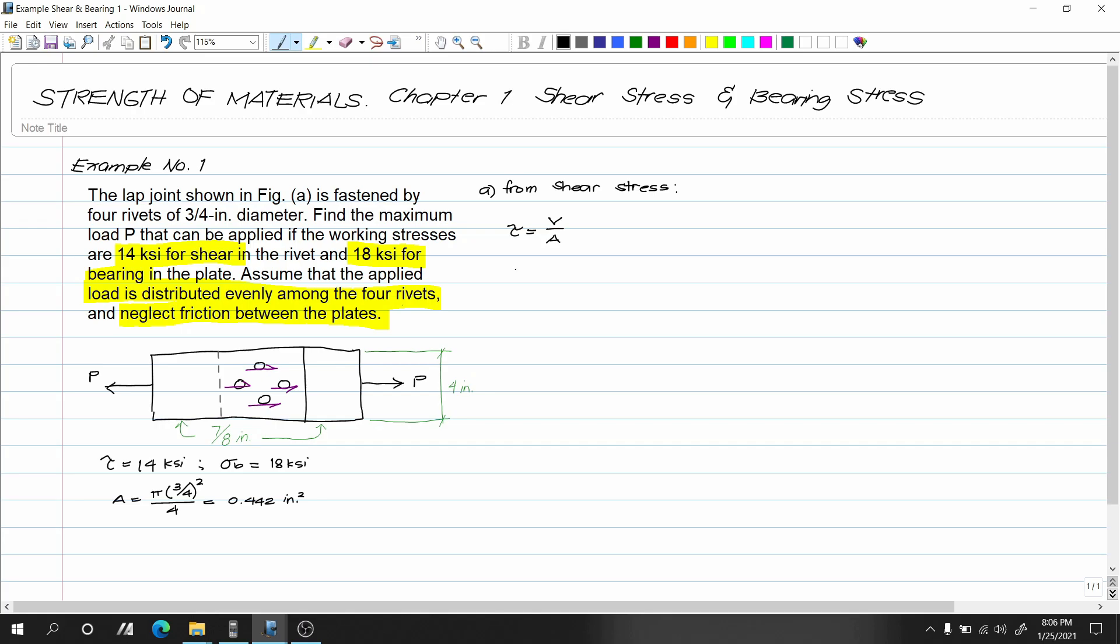So our V becomes: 4P equals P, therefore V equals P/4. The shear stress equals (P/4) divided by A. What is our shear stress? That is 14 KSI. So 14 equals P divided by 4 multiplied by area of 0.442. Let's call this P as P1.